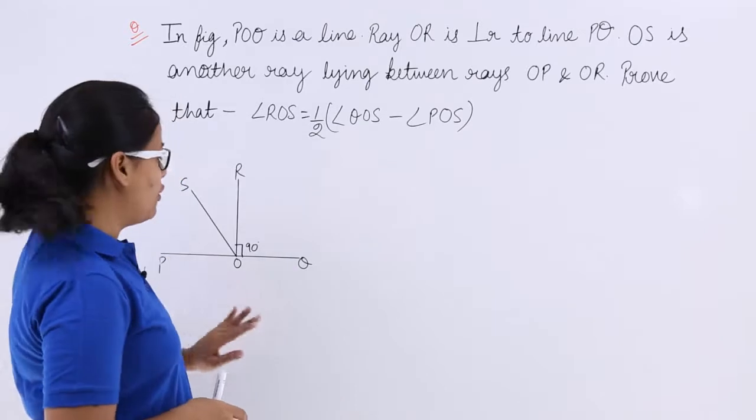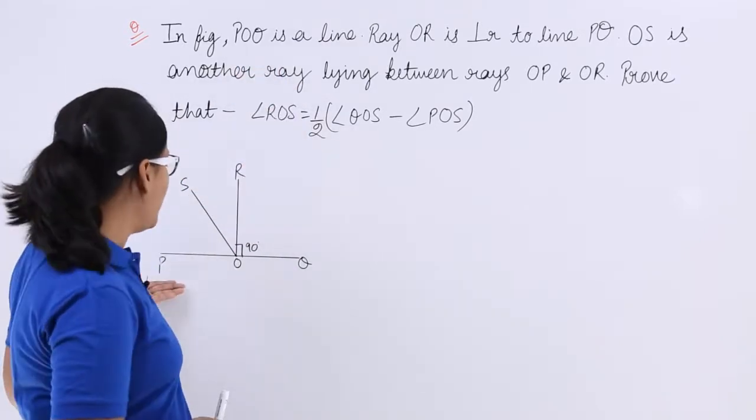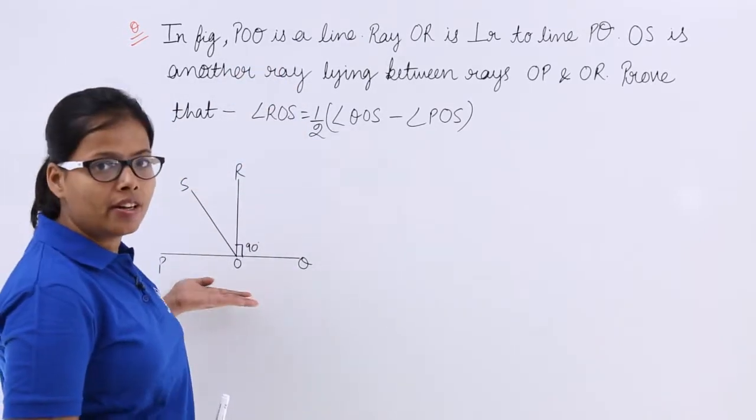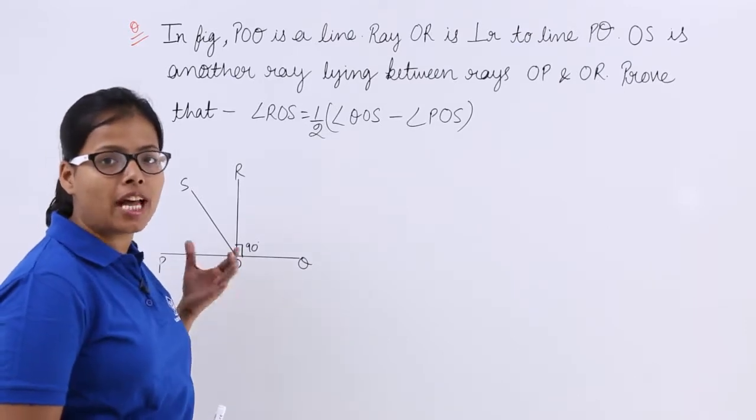In figure, you can see here POQ, this is a line here. You can see this is linear in nature, that's why it's a line.